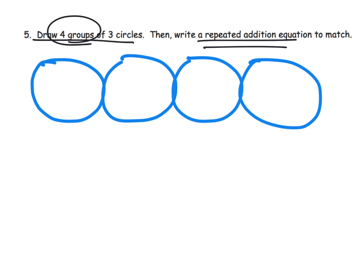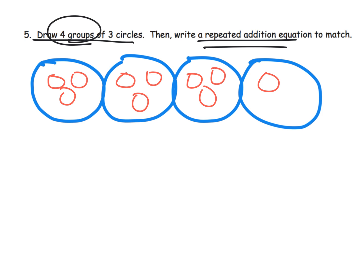One, two, three — one, two, three — one, two, three — one, two, three. There is my four groups: one group, two groups, three groups, four groups — four groups with three circles in each group. Now, what's our repeated addition?